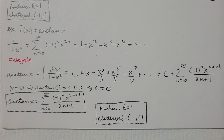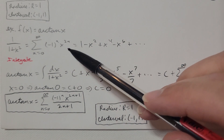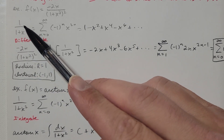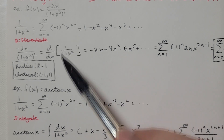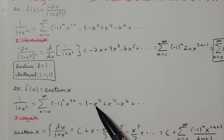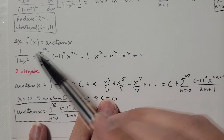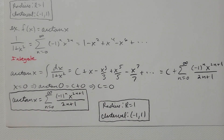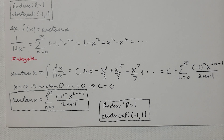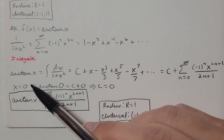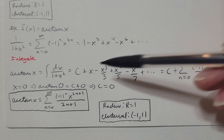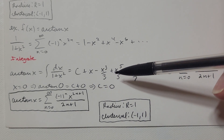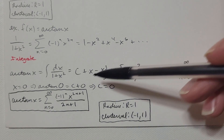Now let's try another one: finding the power series for arctan(x). I'll start with the same power series for 1/(1+x²), here's the series and its expanded form. I'll integrate 1/(1+x²) term by term, since that integral equals arctan(x).